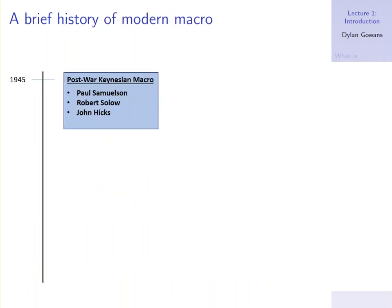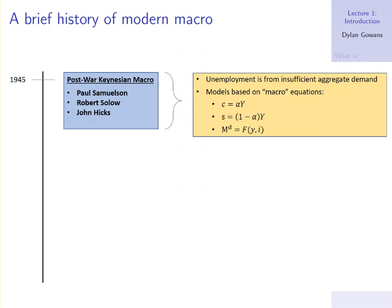So from there, how do we get to what we're going to study today? Right after World War II, 1945, you have what I call post-war Keynesian macro, building off of what Keynes had in the General Theory. We're going to encounter at least one of those names in our course, which is Robert Solow. What did they borrow from Keynes? They borrowed that unemployment is from insufficient aggregate demand — the simple idea that why is there unemployment? Because people aren't consuming enough stuff, they're not buying enough stuff, so there is insufficient demand for employment.